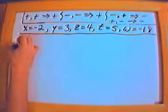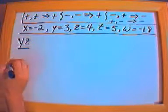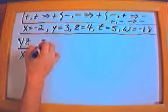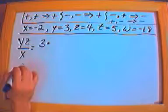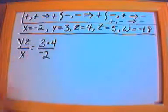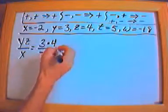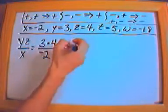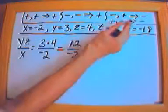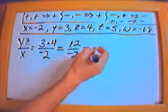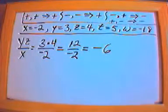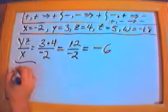Let's say we have yz divided by x. y is 3, z is 4, x is negative 2. Deal with the top first: 3 times 4 is 12, divided by negative 2. Positive divided by a negative gives me a negative, and 12 divided by 2 is simply 6. So the answer is negative 6.